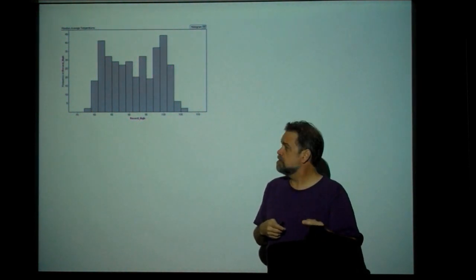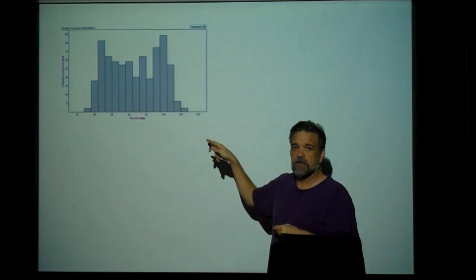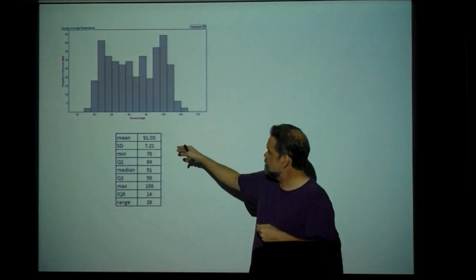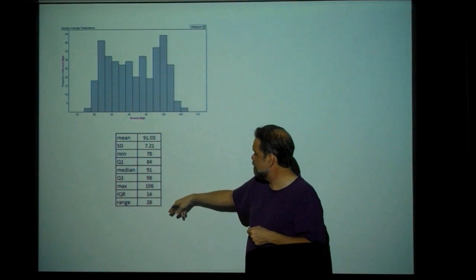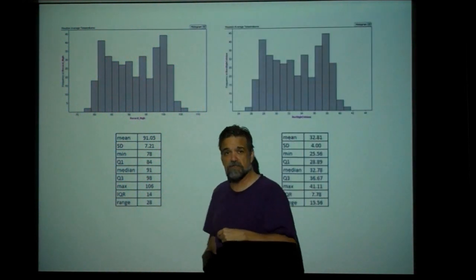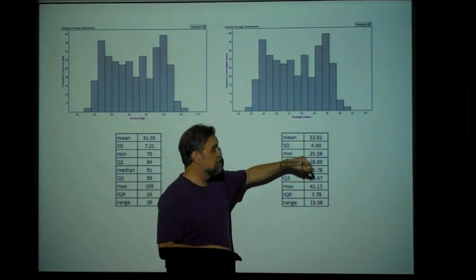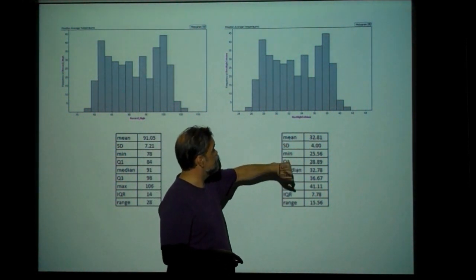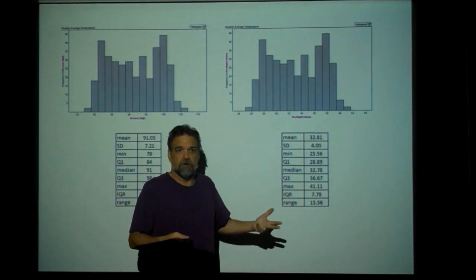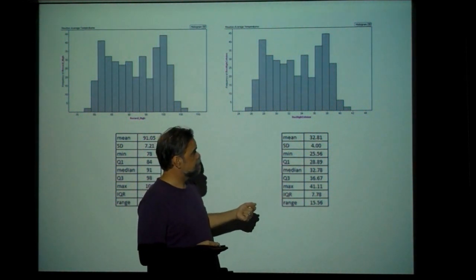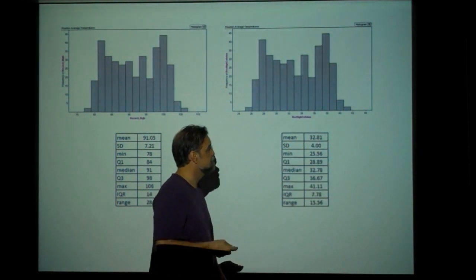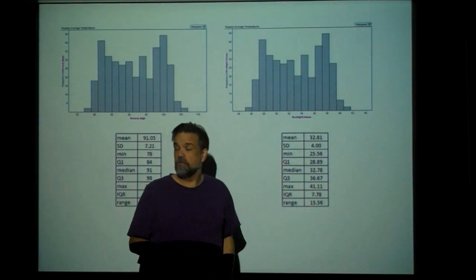The main thing I want to point out is most of the world does not measure data this way. Most of the world would not look at this and say the mean is 91.05, the standard deviation is 7.21, the range is 28 degrees. Most of the world would use degrees Celsius. So most of the world would be looking at it and saying the mean is 32.81, the standard deviation is 4, and the minimum is 25.56, because that's how most of the world measures temperature.